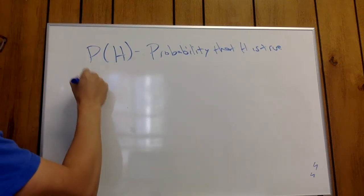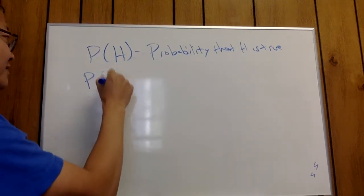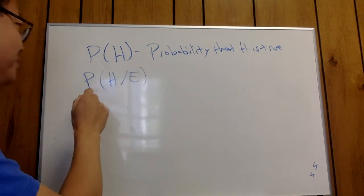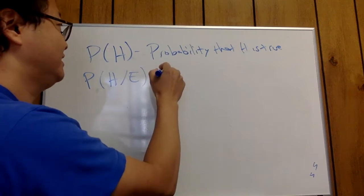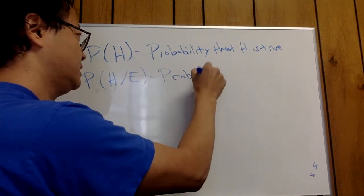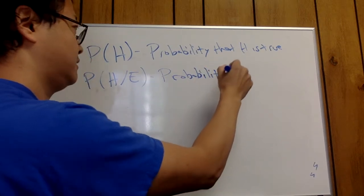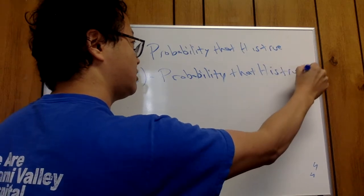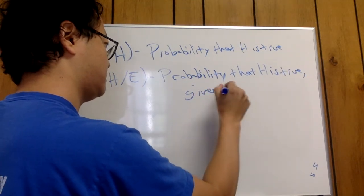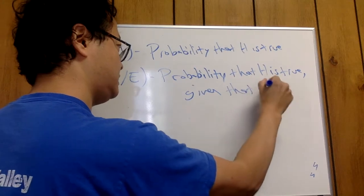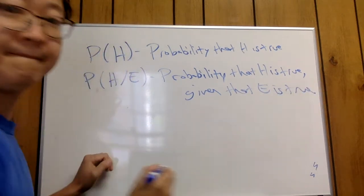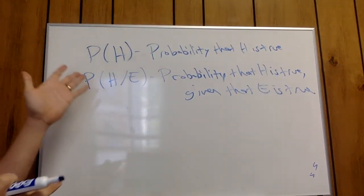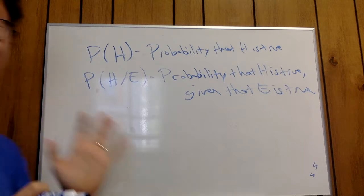Okay, and next we want to understand what are called conditional probabilities. So the slash here, probability H given E, and that's all that means. Probability that H is true given that E is true. All right, so that's going to be the basics. Understanding this is going to be our cornerstone.